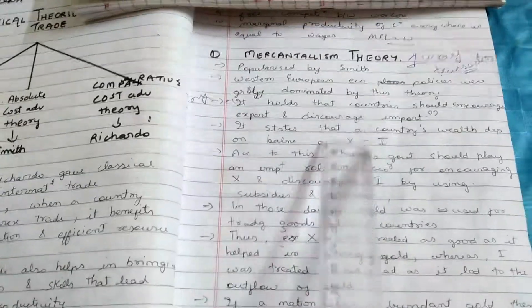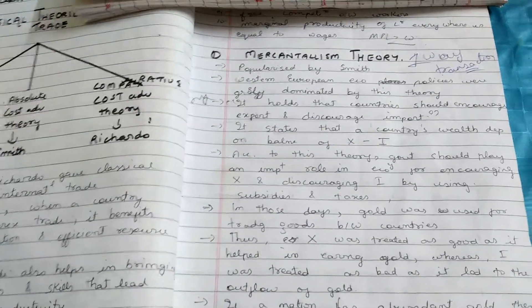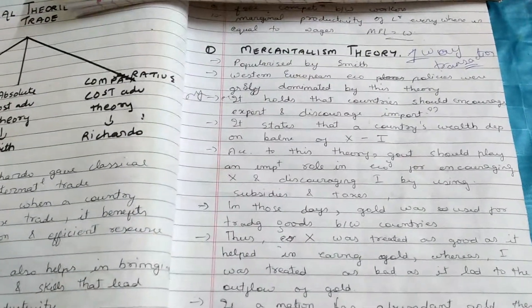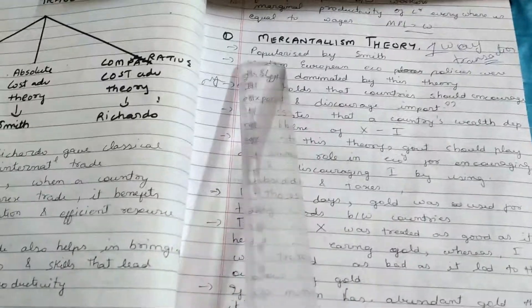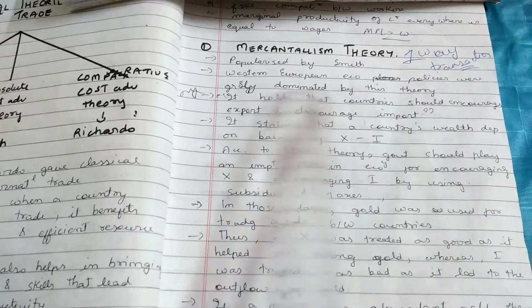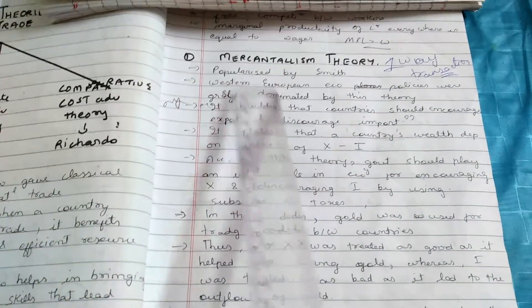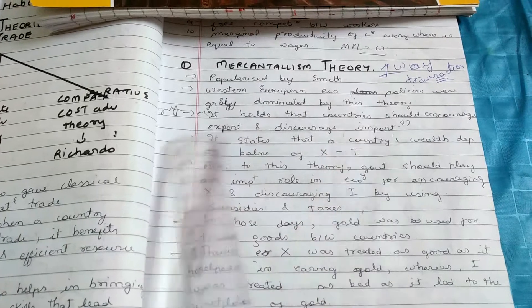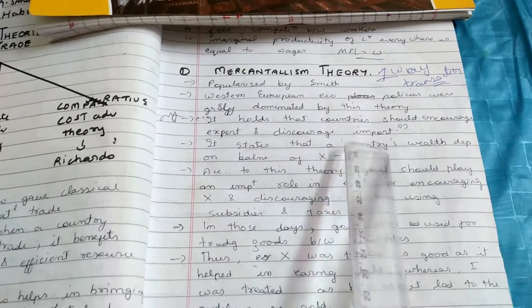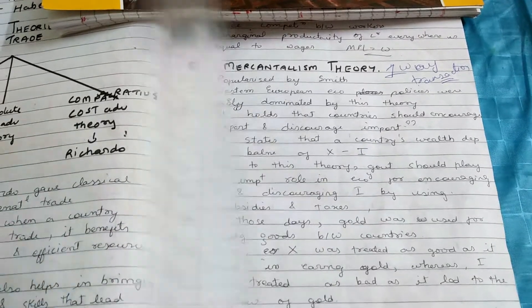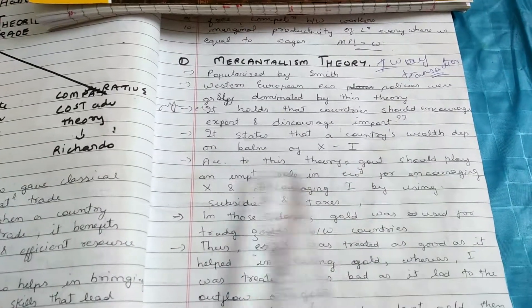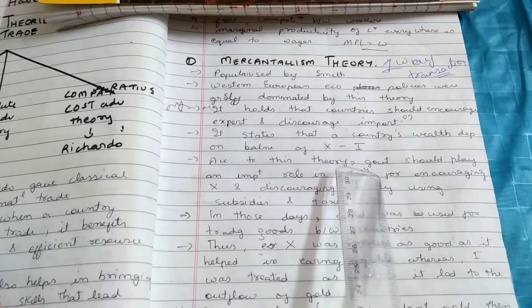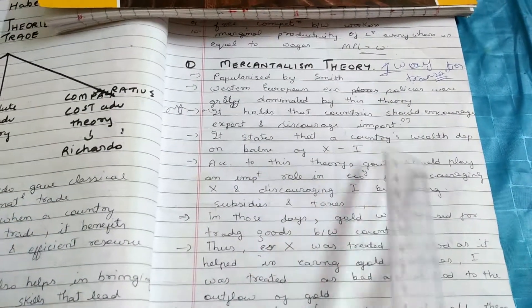This theory says that whichever country has more and more wealth will be more prosperous, developed, and rich. Western European economies were greatly dominated by this theory. It holds that countries should encourage exports and discourage imports. The country's wealth depends on the balance of export and import — how much they export and import determines the country's wealth.